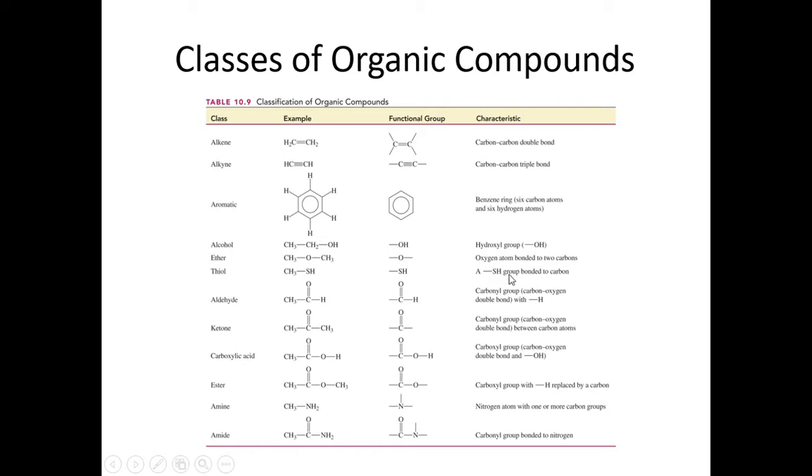We will definitely see thiol groups. That's an SH group bonded to carbon. It acts like a hydroxyl group. We will see aldehydes. So we have a carbonyl at the end of a molecule, also bonded to a hydrogen and some R group up to the side. Ketones, we have two R groups with a carbonyl group in the middle.